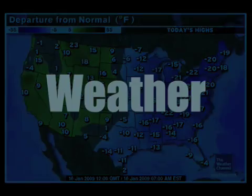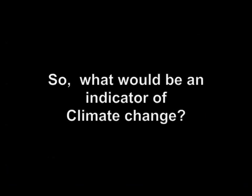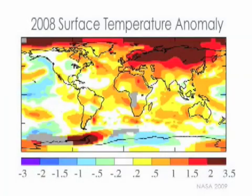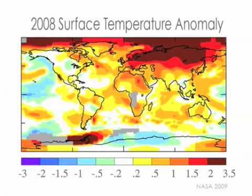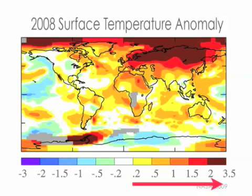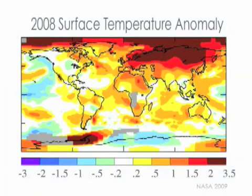So what would an indicator of climate change be? Let's take a look at another weather map — the kind climatologists pay attention to. What you'll see is the NASA year-end summary for global surface temperatures in 2008. It's color-coded to show the deviation from average temperatures in the base period from 1951 to 1980. Reds are warm, blues and greens are cold. What you immediately notice is that there's a whole lot of reds on the map, even dark reds.